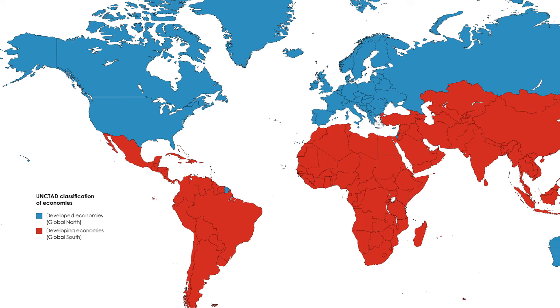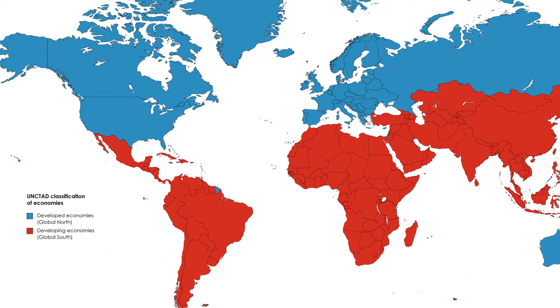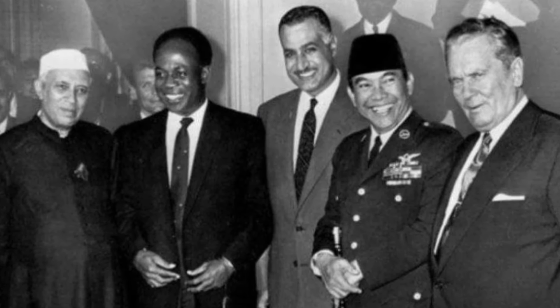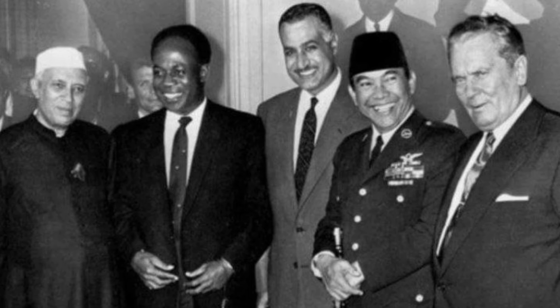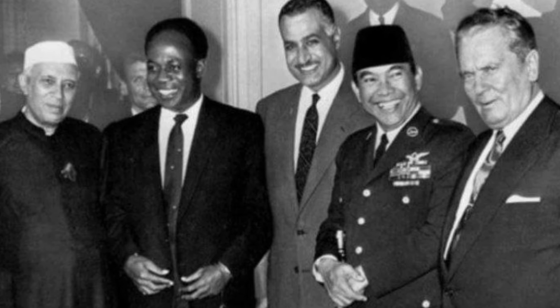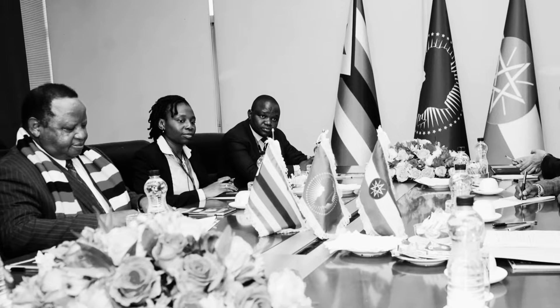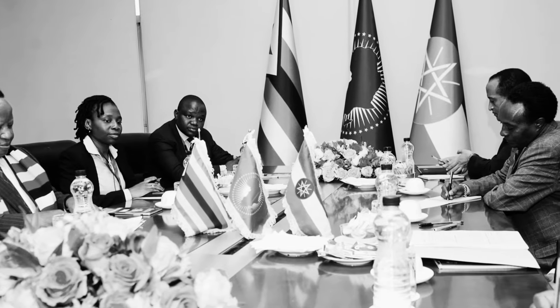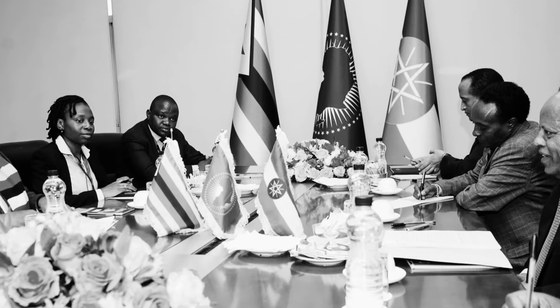Most of these countries tried to maintain a policy of non-alignment. This movement, initiated by countries like India, Egypt, Yugoslavia, and Indonesia, sought neutrality in the Cold War context. The Non-Aligned Movement was founded in 1961, with its participants striving to avoid participation in large military-political alliances like NATO or the Warsaw Pact. However, it's important to note that some countries in the Global South had close ties with the Soviet Union and were even its allies — for example, Cuba, Vietnam, Angola, and Ethiopia, which were actively supported by the USSR, especially in military and economic terms.